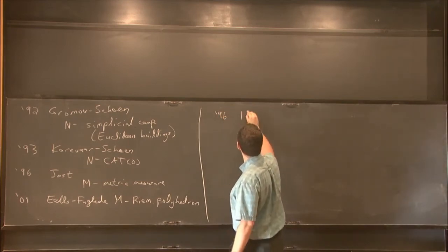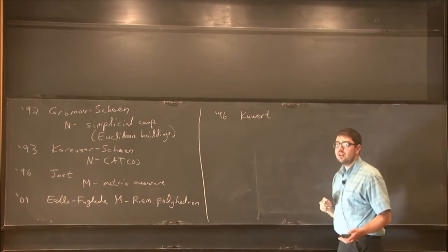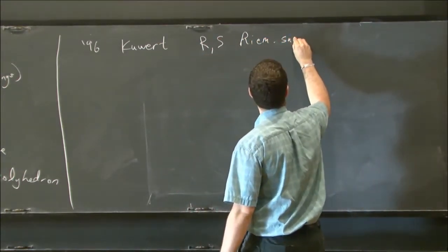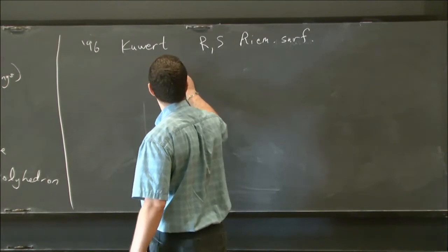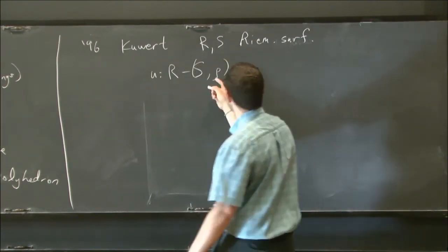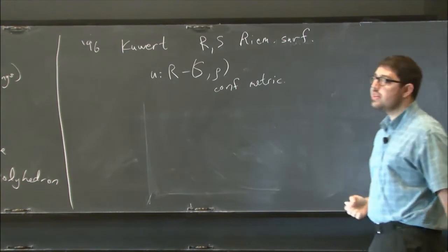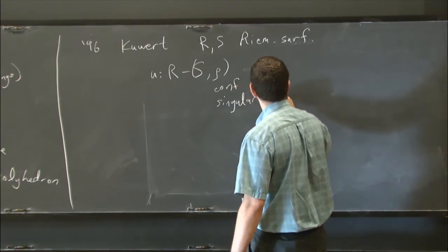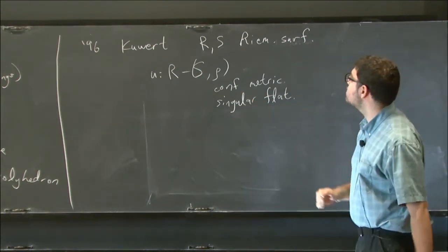So in 96, Kuvert studied harmonic maps from between Riemann surfaces. So R and S are Riemann surfaces. And he's looking at harmonic maps from R to S, S endowed with some conformal metric. This is a conformal metric. And in particular, when this is singular flat, a singular flat metric, he proves existence of harmonic maps by approximating this metric by smooth metrics, where the curvature is sort of accumulating at the discrete cone points of this singular metric.